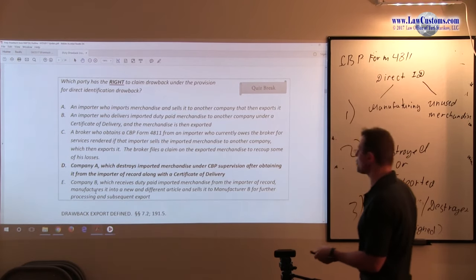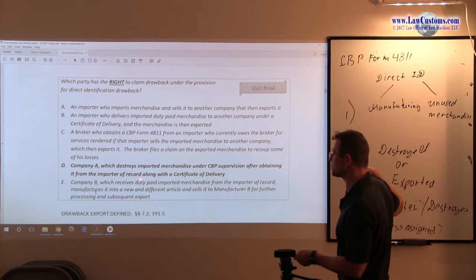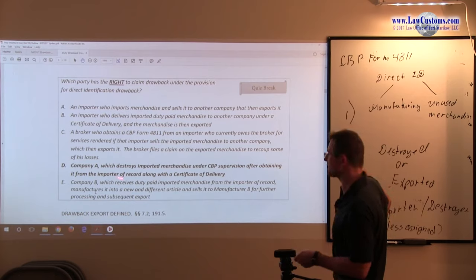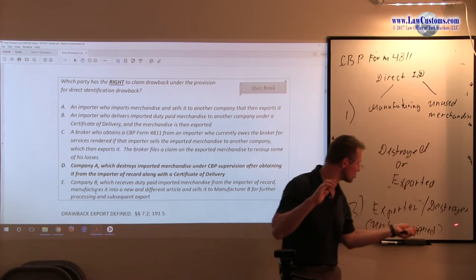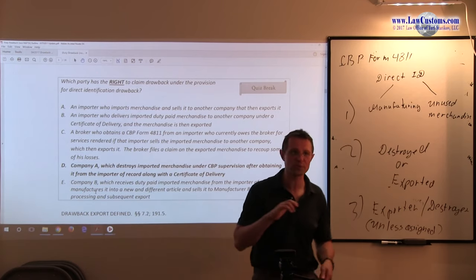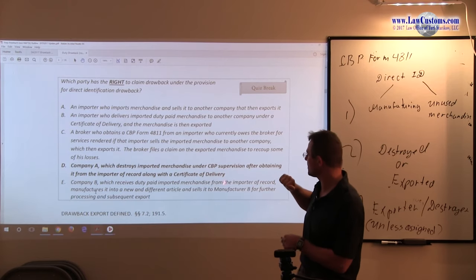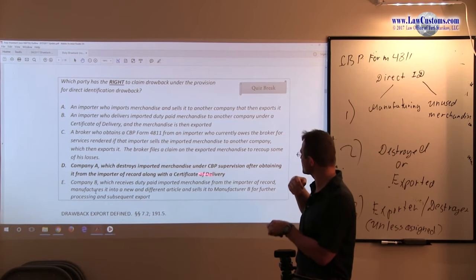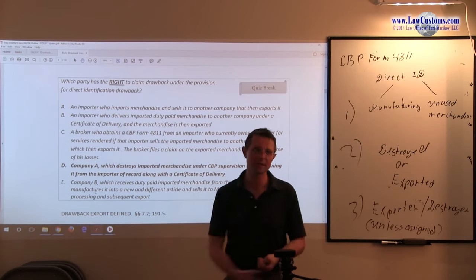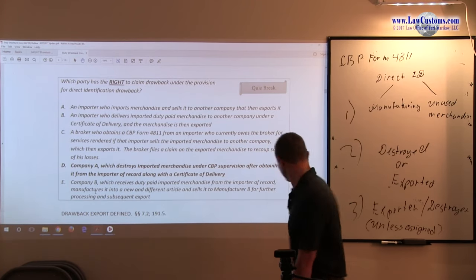Going to D: Company A, which destroys merchandise under CBP supervision after obtaining it from the importer of record along with the certificate of delivery. We know the default party is a destroyer. The merchandise was destroyed, the destroyer is Company A, so it's eligible by default. They obtained the proper chain of custody documents to show they were entitled to make the destruction and it was done under CBP supervision, so it was done on notice. The procedural protocol was duly followed. Therefore, answer D is the correct answer choice.